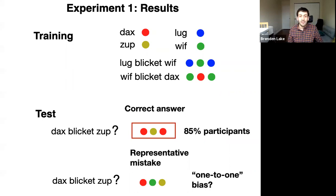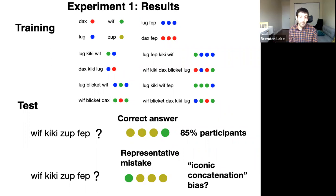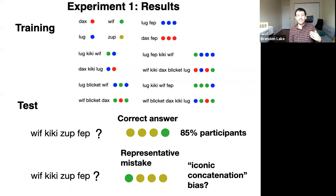This suggested that people come to these tasks with strong inductive biases. Another compositional example: WIF KIKI ZUP FEP. KIKI is a conjunction where you do the last thing first. So WIF KIKI ZUP FEP means you do ZUP FEP first — yellow, yellow, yellow — and then WIF — green. 85% of participants got this right, but a representative mistake was to do the first thing first and the last thing last, a more natural iconic concatenation style. This suggests people have a type of iconic concatenation bias.